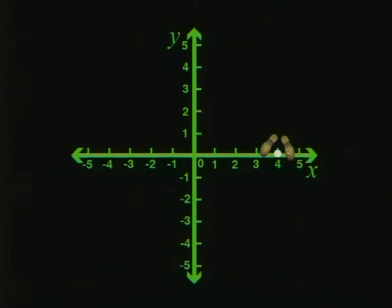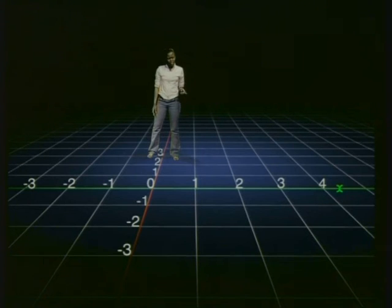Try this now. Go and stand on 0, 3. The y-value is 3, and the x-value is 0. So I must stand on the y-axis over here. That's because x is 0 on the y-axis. So if a point has the x-coordinate of 0, then it lies on the y-axis.